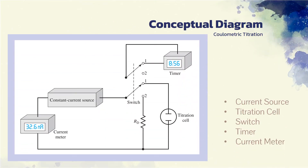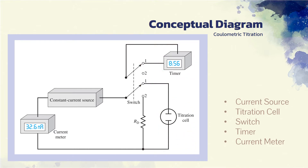As shown in the figure, moving the switch to position 1 simultaneously starts the timer and initiates a current in the titration cell. When the switch is moved to position 2, the electrolysis and the timing are discontinued. With the switch in this position, however, current continues to be drawn from the source and passes through a dummy resistor that has about the same electrical resistance as the cell. This arrangement ensures continuous operation of the source, thus aiding in maintaining a constant current.